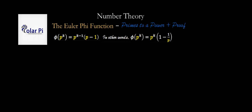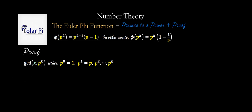Now for the proof as to why this has to be true: first notice that the only factors of p to the k are p to the 0, 1, p, p squared, p cubed, all the way to p to the k. So those are the only factors of p to the k.